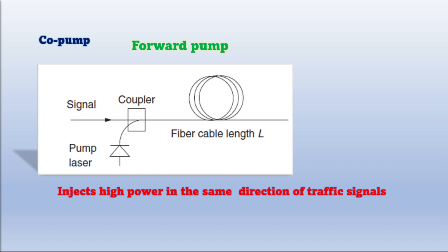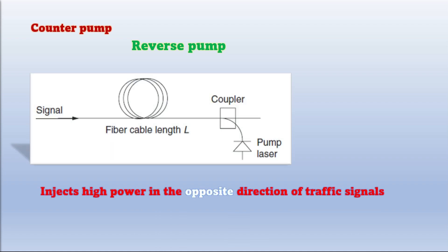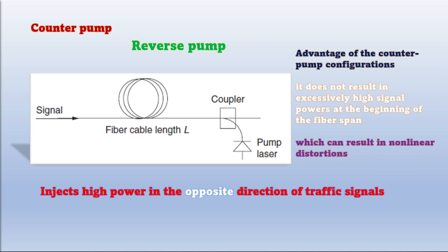Counter pump configuration, called as reverse pump, injects high power in the opposite direction of traffic signals. This configuration is typically preferred since it does not result in excessively high signal powers at the beginning of the fiber span, which can result in non-linear distortions.